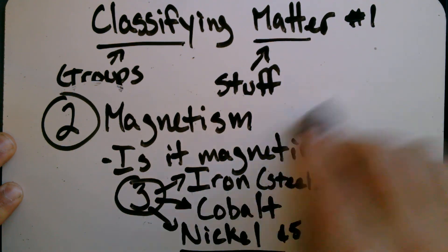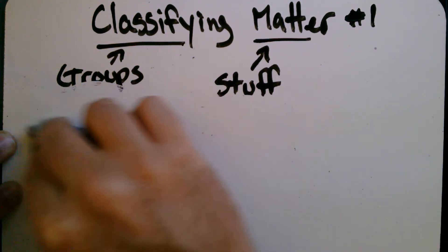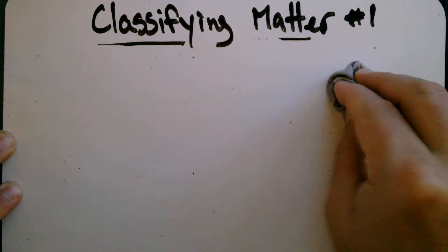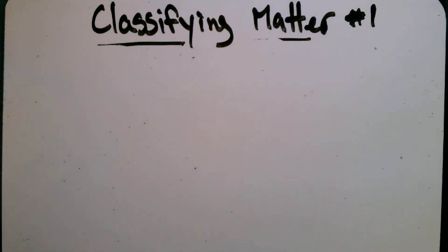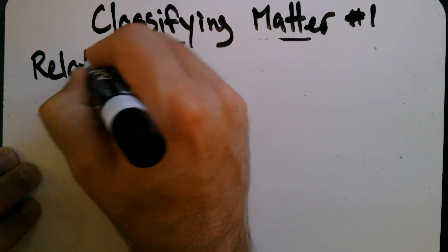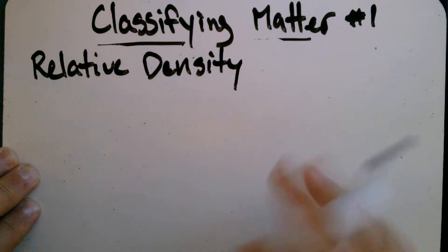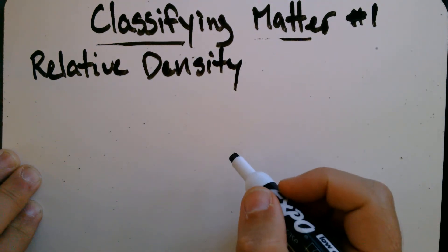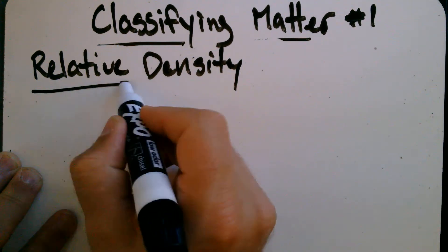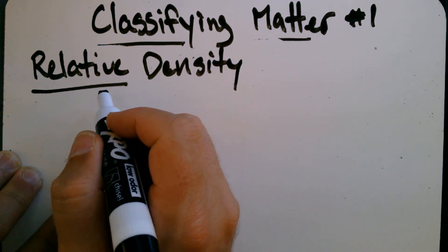All right, the last way that we are going to classify matter. And I'm going to erase the stuff in the groups, just because I need the space. The last way we're going to classify matter is by relative density. Now, that kind of sounds like a complicated science word, but it's actually a really simple concept. So, this word relative means two things. You're comparing two things.